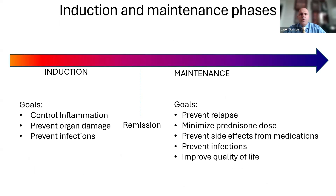How do we approach treatment of GPA? We tend to break this up into two phases. In the induction phase, the disease is active, and we want to control the disease fairly quickly and control that inflammation. Our goal is to prevent organ damage and prevent infections, and we hope to get to a remission state — remission basically meaning no evidence of active disease. After remission, we enter a maintenance phase. This is an important phase because the disease can relapse, so our main goals are to prevent relapses, minimize steroids, prevent side effects from medications, prevent infections, and improve quality of life.